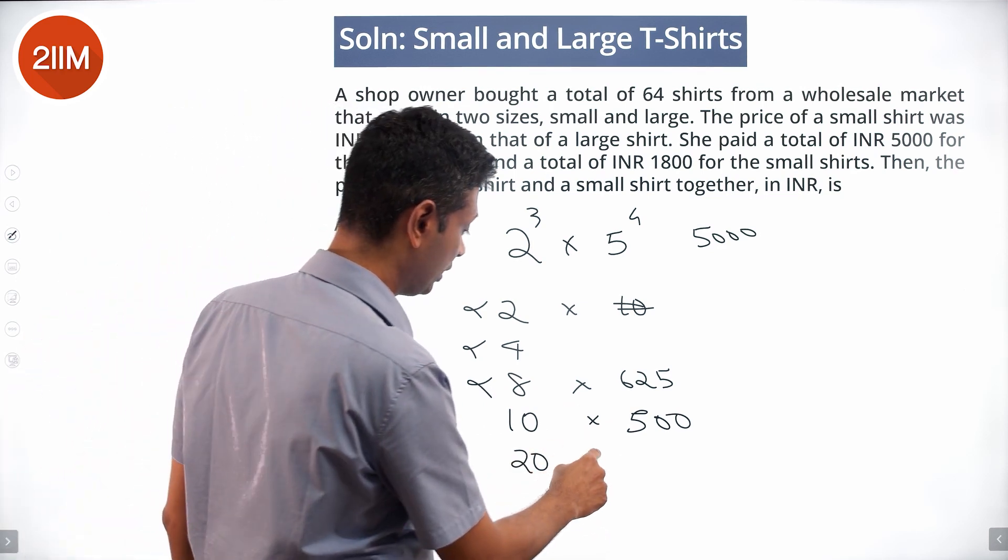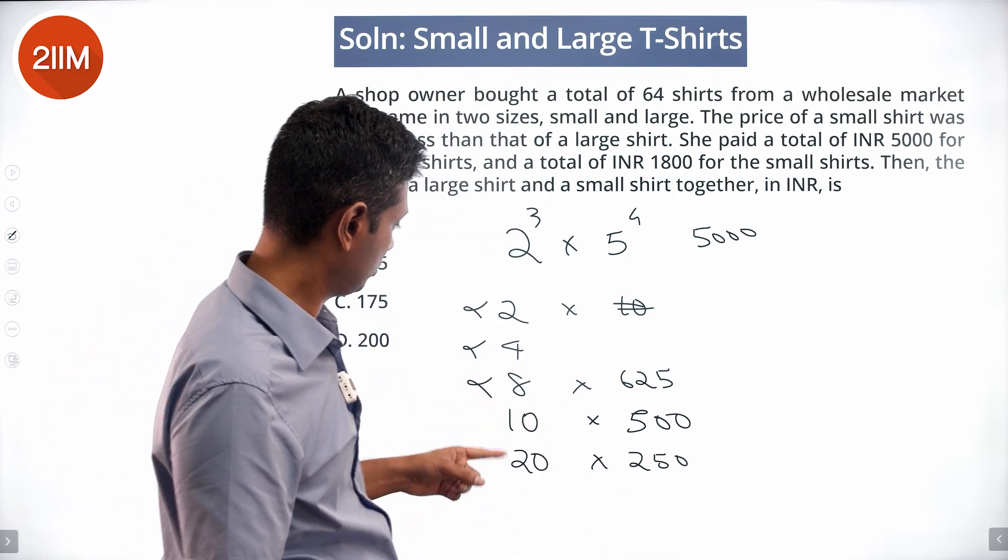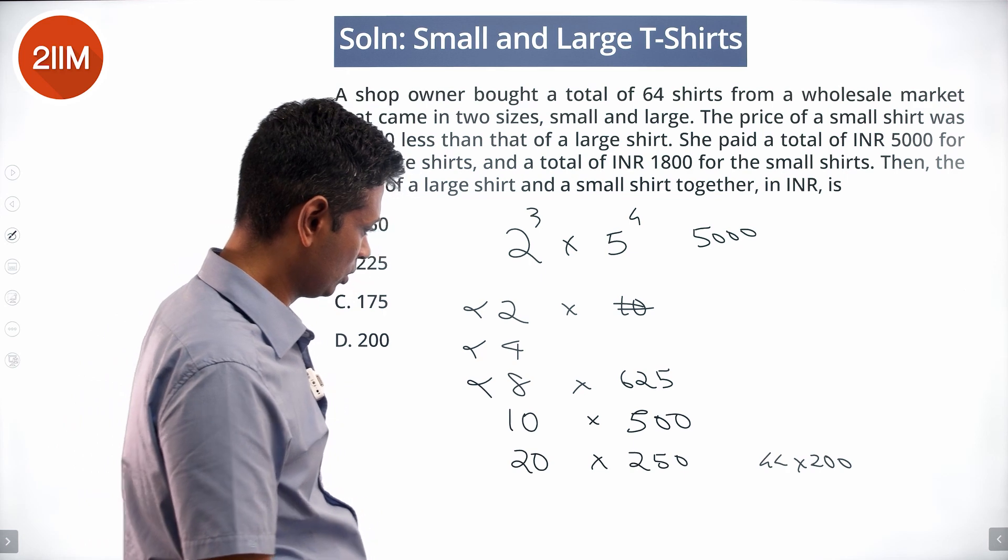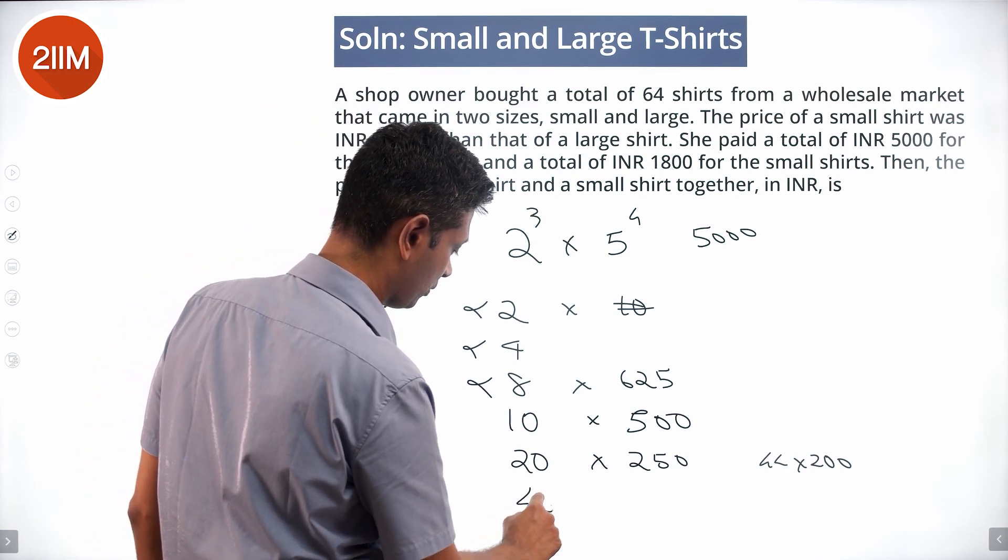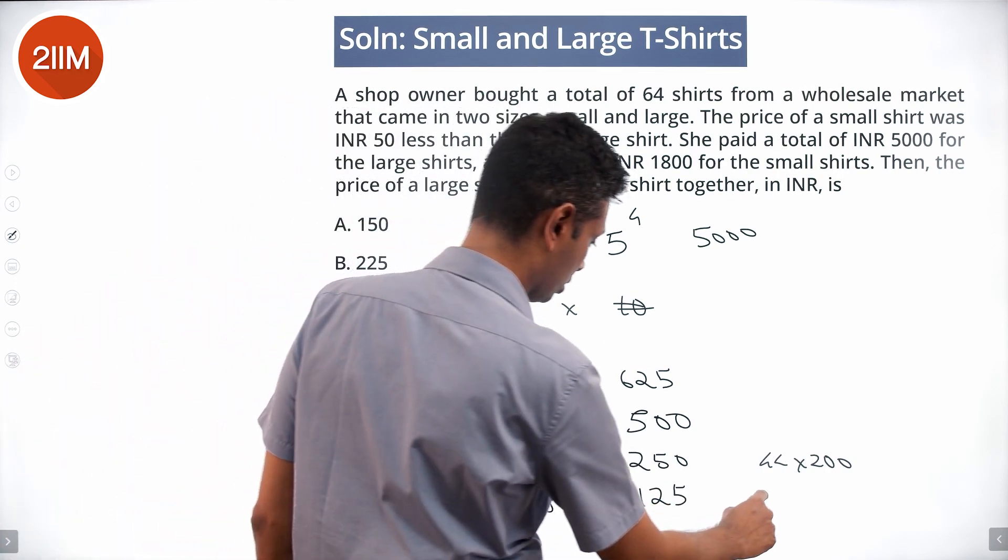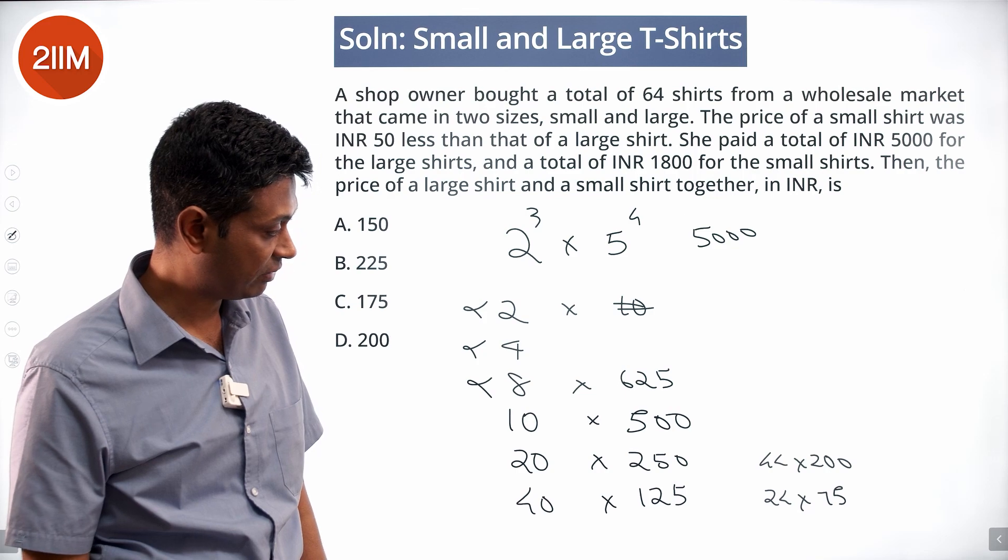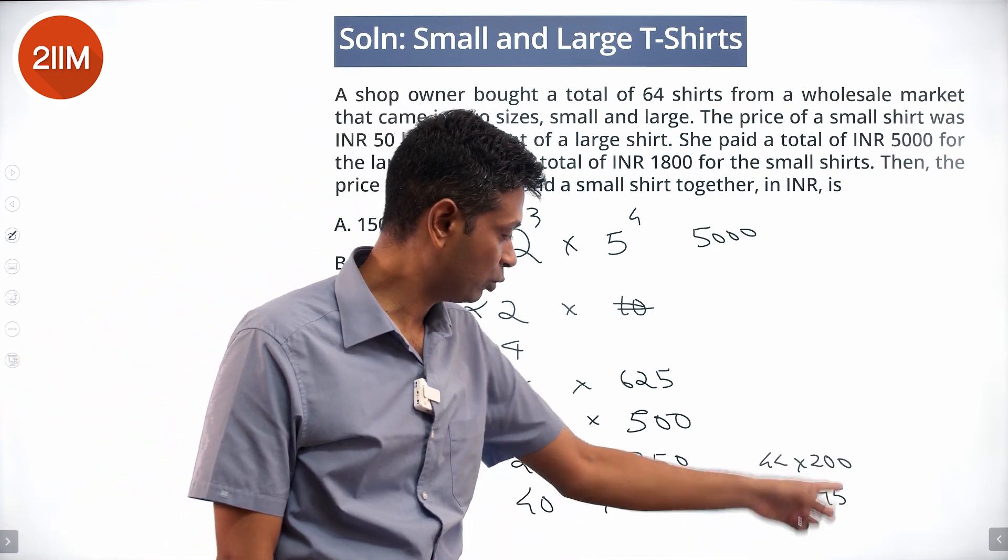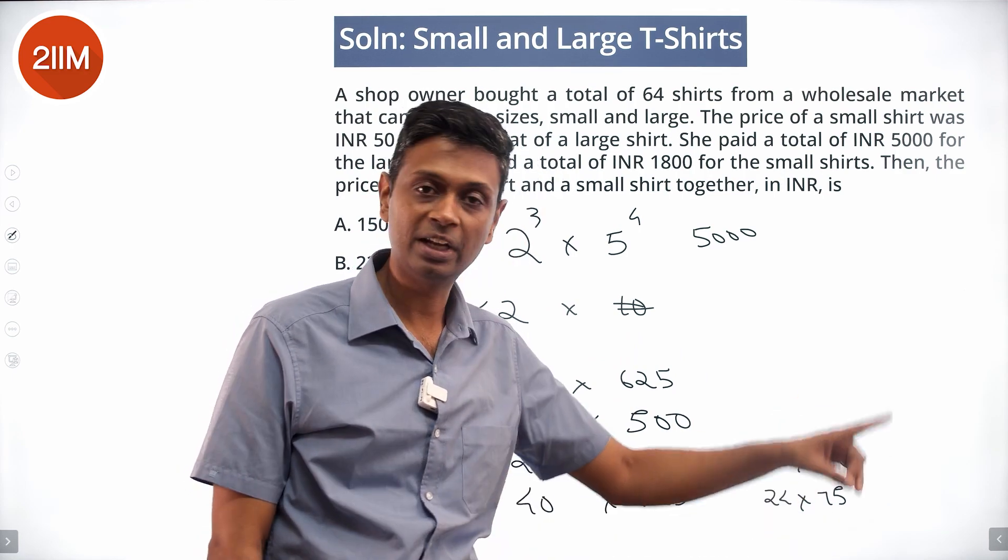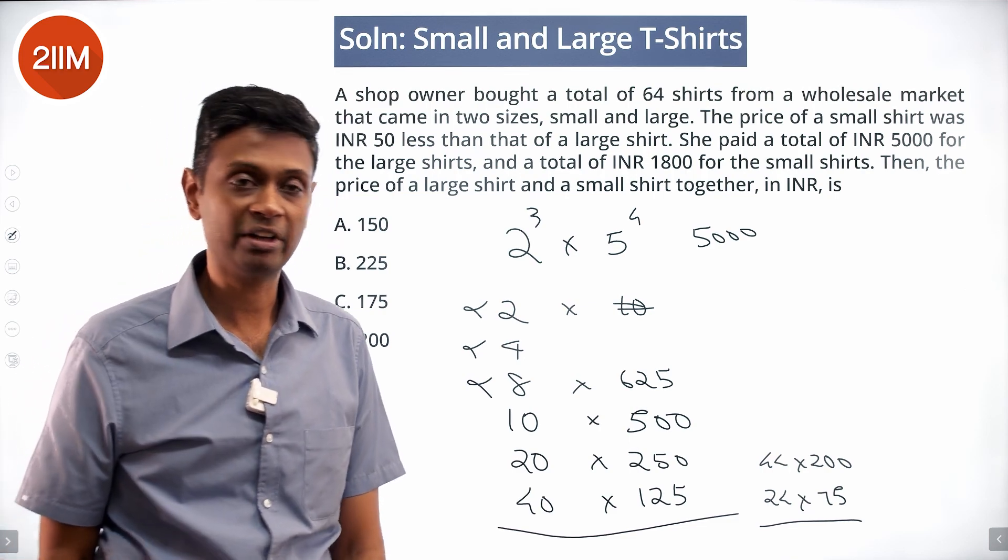The remaining part would be 44 into 200, that's a large number, doesn't work. Let's try 40 into 125. The remaining would be 24 into 75. 24 into 75 indeed equals 1800. 75 into 4 is 300, into 6 is 1800. This works! 40 large shirts at 125, 24 small shirts at 75.